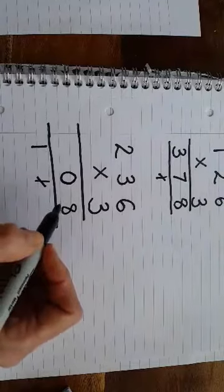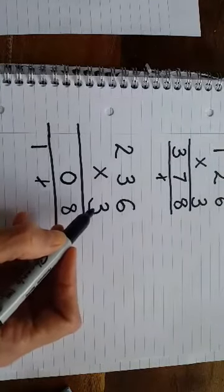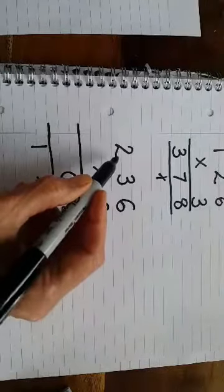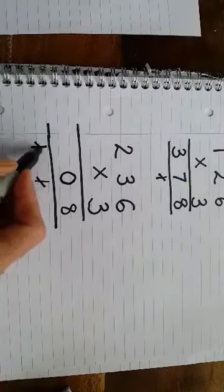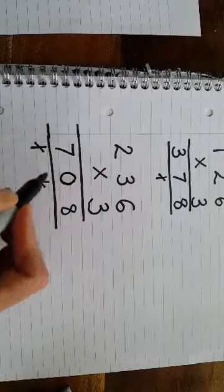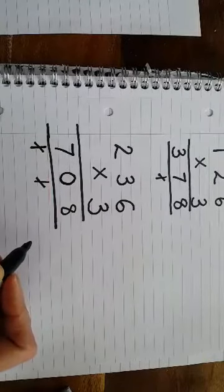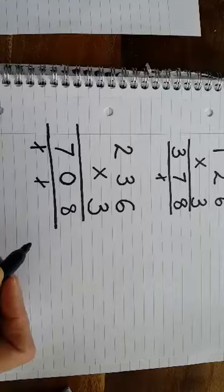And then the last thing we have to do is multiply the hundreds column. So 3 times 2 is 6. Add on the 1 gives you 7. So the answer to 236 times 3 is 708.